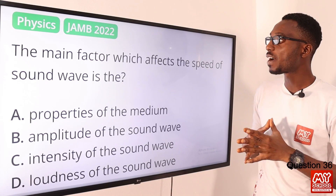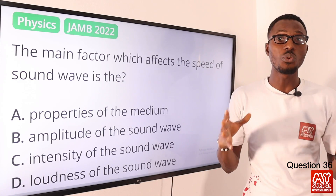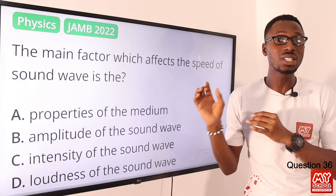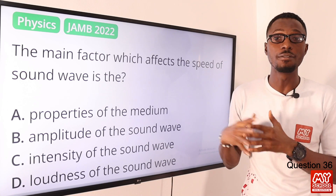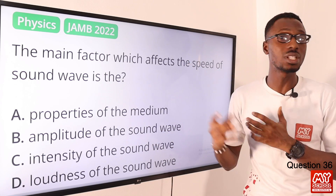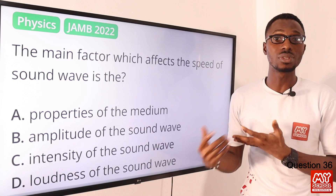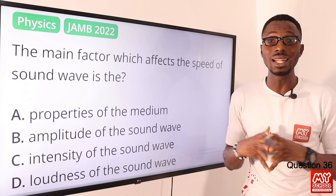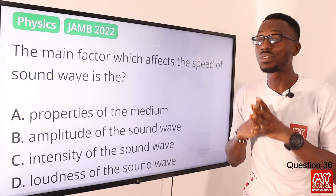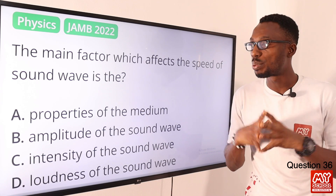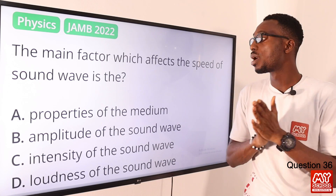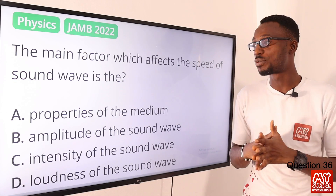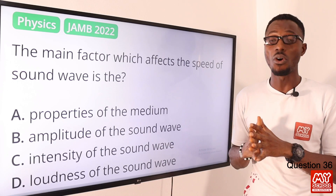Number 36. The main factor which affects the speed of a sound wave is the properties of the medium. Temperature influences the speed of sound, as do other properties like the elasticity and density of the medium. The properties of the medium are very essential regarding the speed of sound waves. The correct option is option A — the properties of the medium.